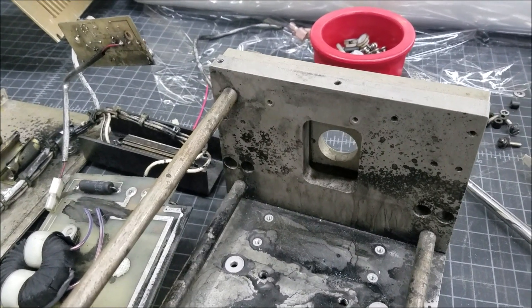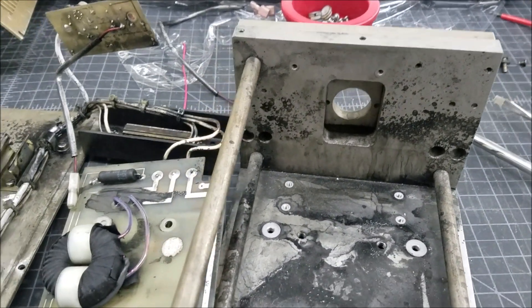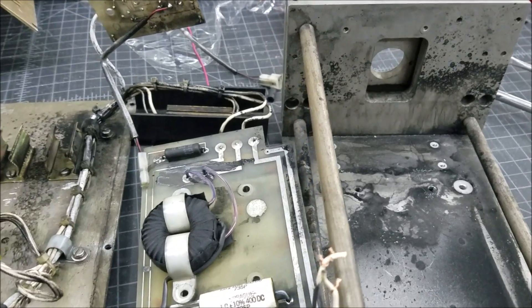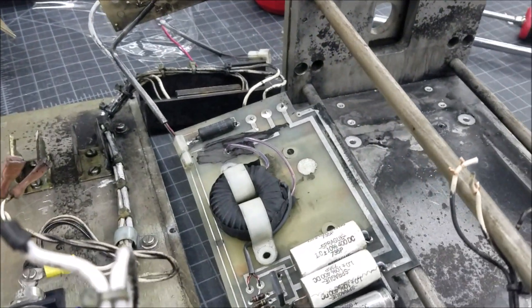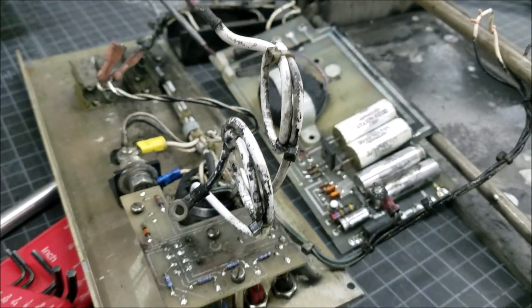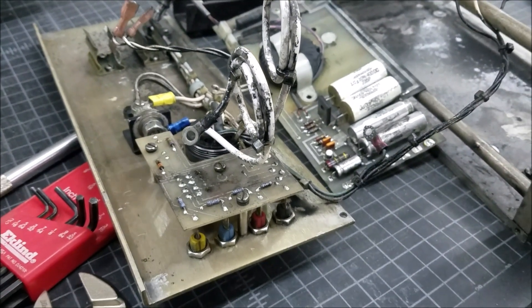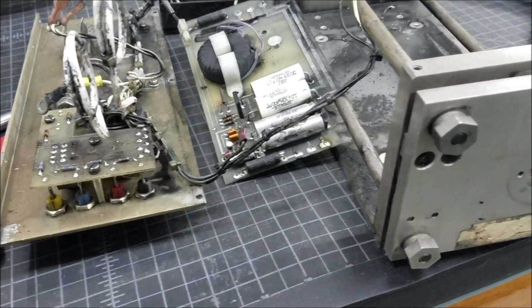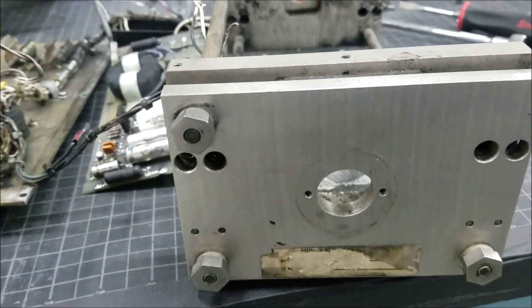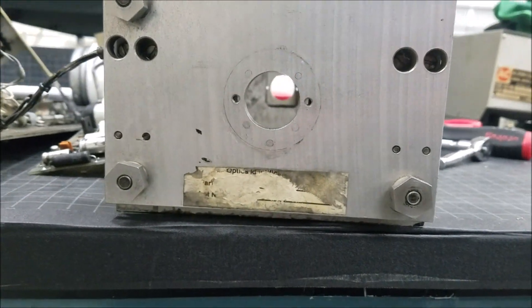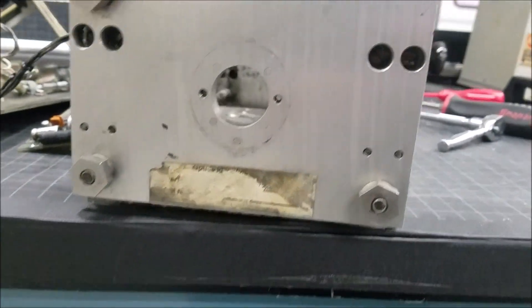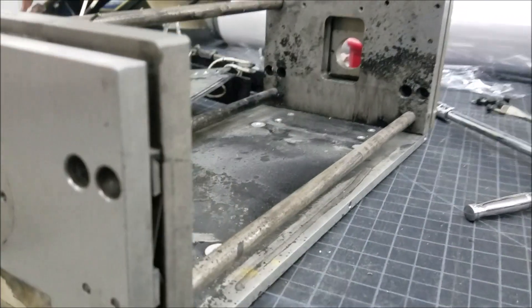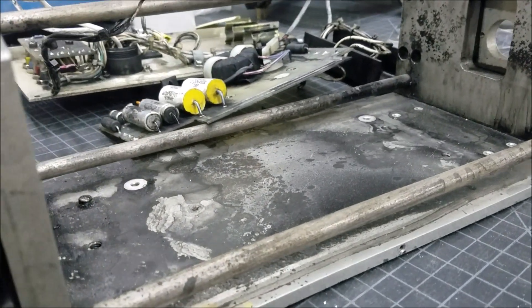With the laser tube and optics removed, we can see just how much toner there is inside of the laser head's frame and on the electronics. Toner is not an easy thing to remove, especially when it's been baked on from all the heat generated by the laser tube during years of operation. The hardest things to clean on this laser head will be the wires, small electronic components, and the layers of buildup on the bottom of the laser's frame.